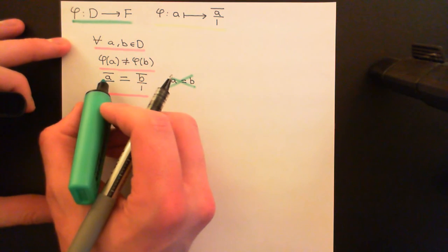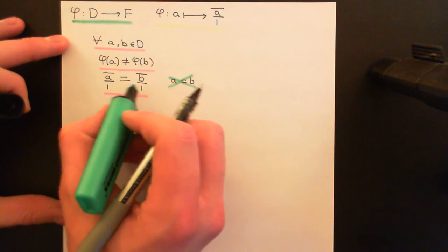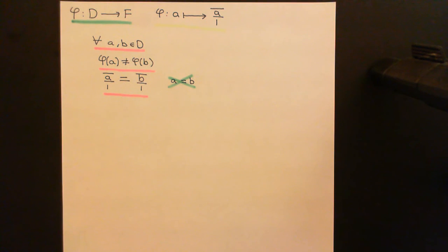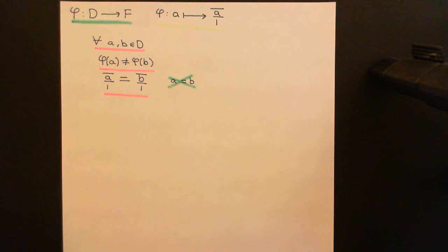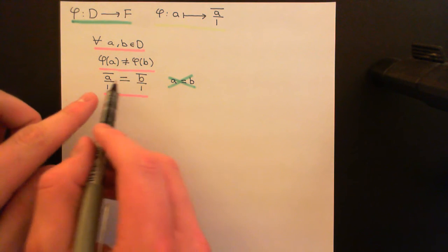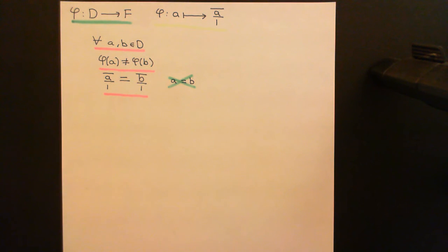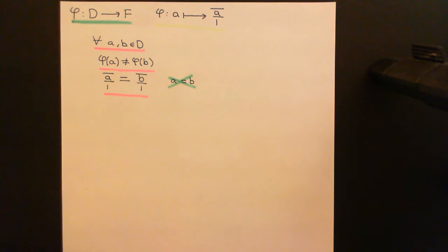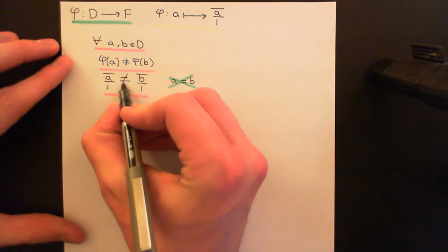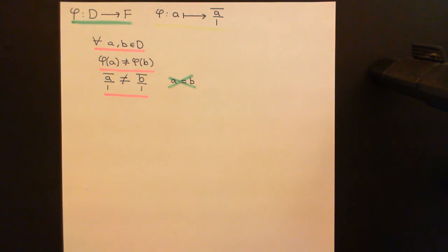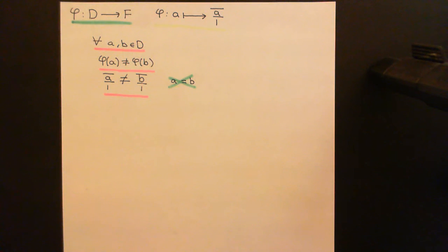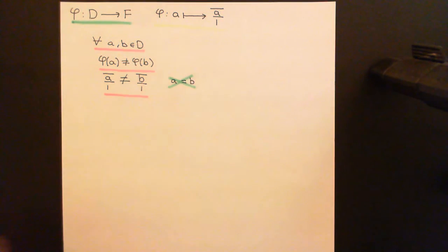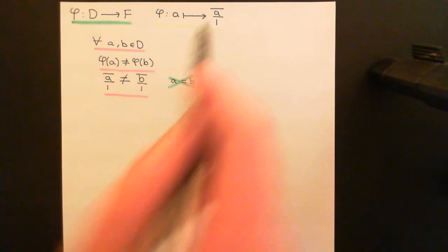Saying that the equivalence class containing A over 1 is the same as the equivalence class containing B over 1 instantly implies that A and B are the same element in the integral domain. That can only happen if A equals B — it's not a new element. For all different elements in the integral domain, these equivalence classes of fractions will not be equal to one another. So this cannot be true, and truly this is an injective map: all elements of the integral domain are mapped onto distinct equivalence classes. No two are the same unless you're talking about the same element.